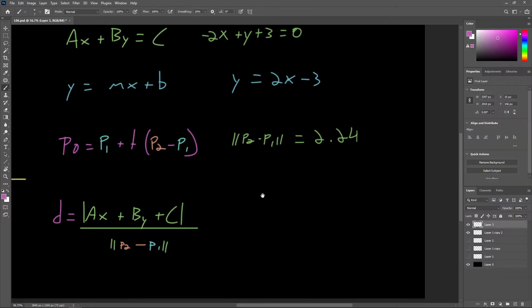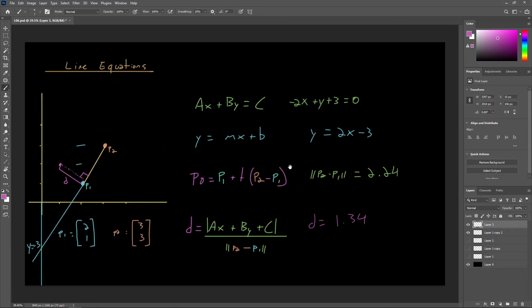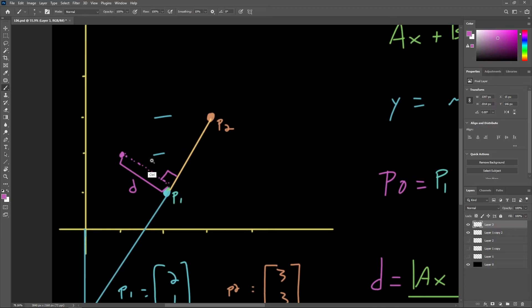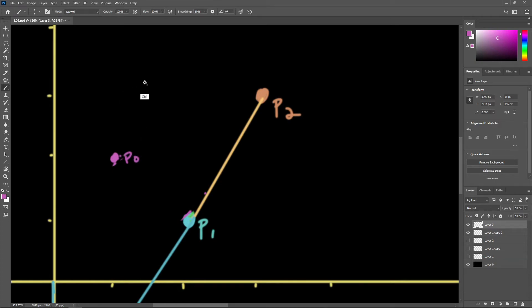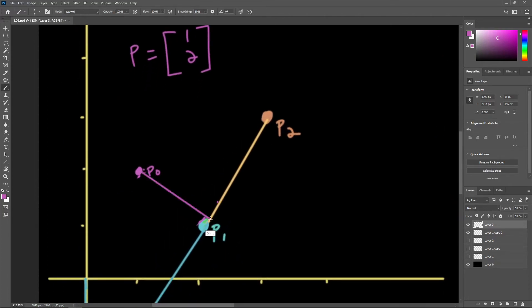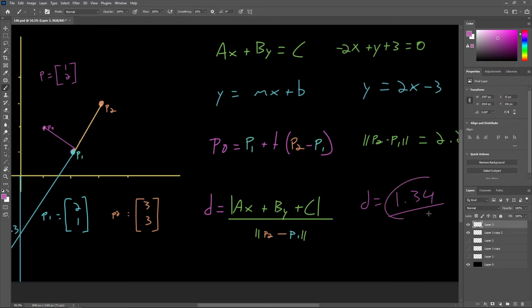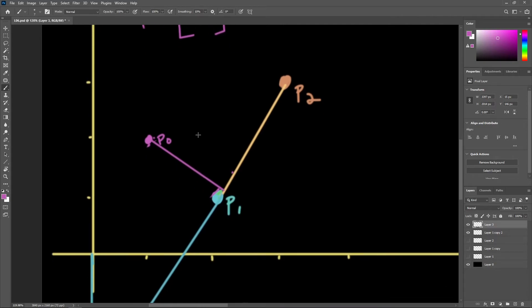So let's record our answer here. D is equal to 1.34, rounded to two decimal places here. Let's write in the point that we were testing here just to see the visual intuition behind this. Let's get rid of some of these extra lines we had drawn in here and just call this P0. P0 was defined at 1, 2. That is the position of P0.